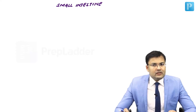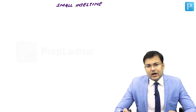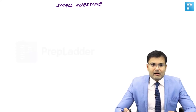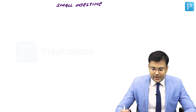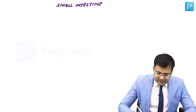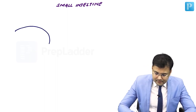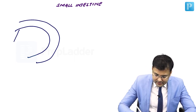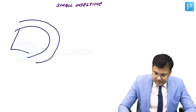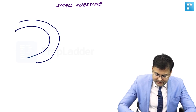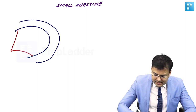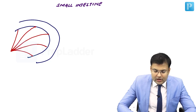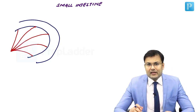We are going to discuss concepts related to bowel diverticula. This is the bowel, and this is the mesentery of bowel. Mesentery means lymphovascular supply. So bowel and mesentery of bowel.